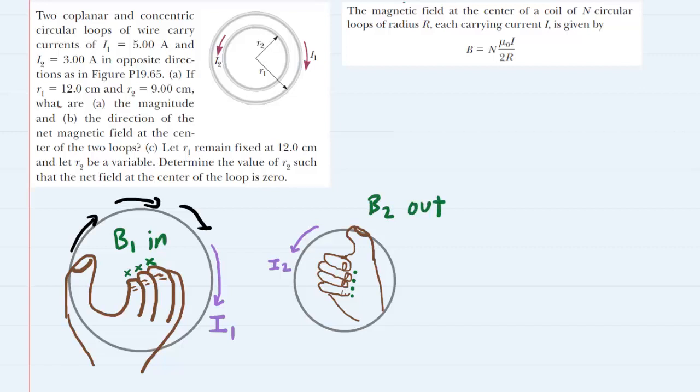Now typically out of the screen is assigned a positive value and into the screen is assigned a negative value. So this means that our B2 will be positive and our B1 will be negative.